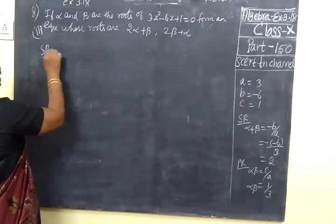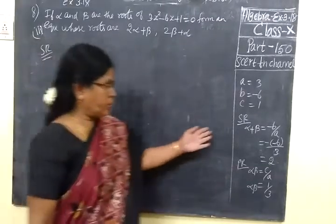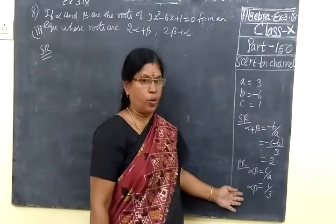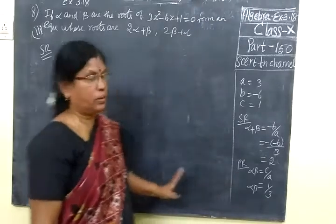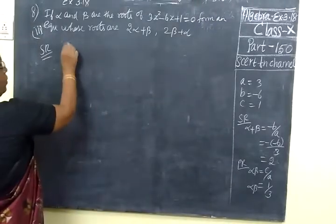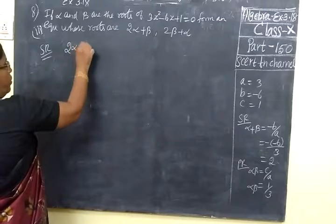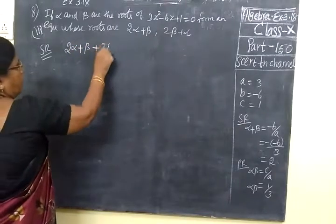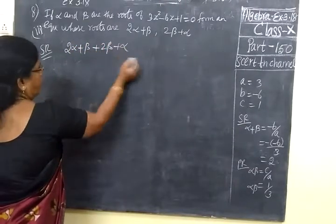You should know when that is the form sum of roots, you should know when that is the form sum of roots or product of roots. Formula we use it. The same thing we use here. Sum of roots: 2 alpha plus beta, then 2 beta plus alpha.